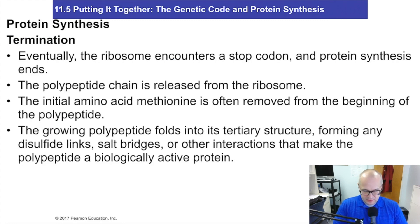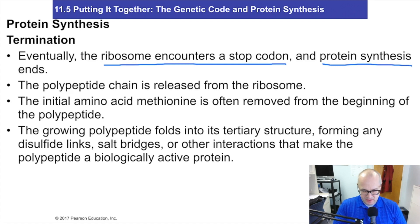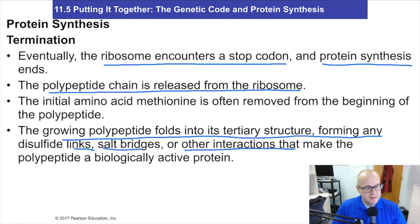Termination: eventually the ribosome will encounter the stop codon, which tells the ribosome no more amino acids — we're done. That's when protein synthesis ends and the polypeptide chain is released from the ribosome. The growing polypeptide then folds into its tertiary structure, forming any disulfide links, salt bridges, and other interactions that make the protein biologically active — all because DNA sent mRNA out to the ribosome.